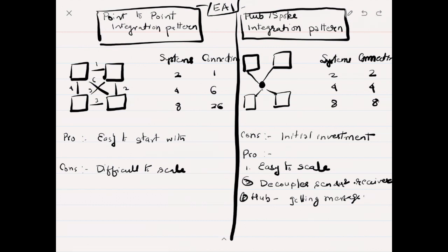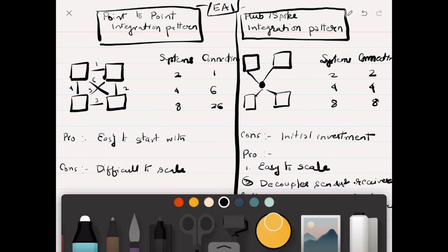The hub can have all the responsibilities of getting the messages and sending to the right receiver. The hub can log the messages or have better logging mechanisms, so all these responsibilities can be focused on the hub and the hub can do this job better.